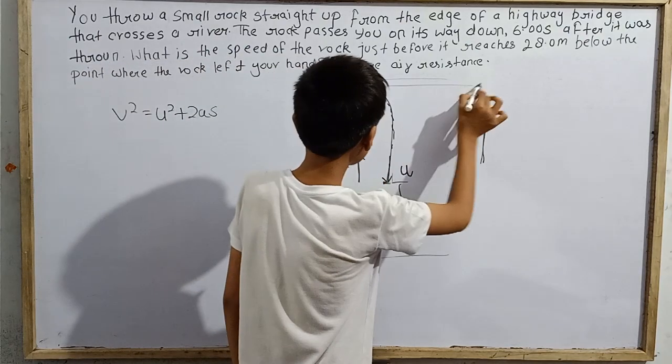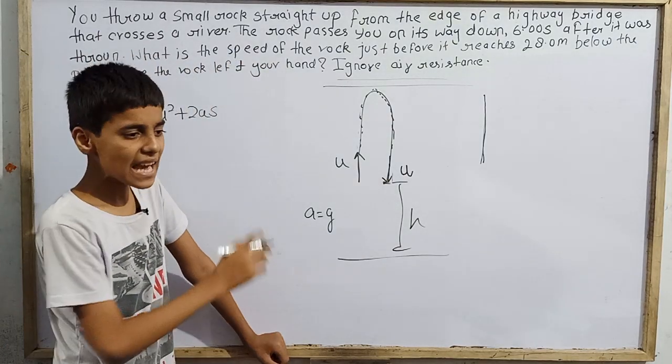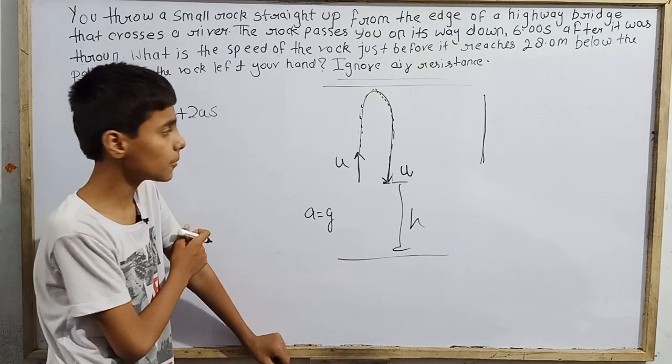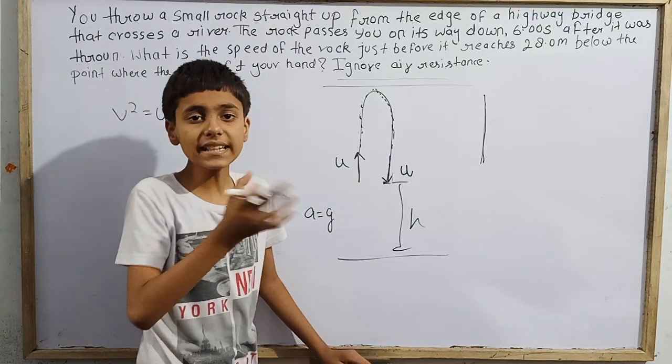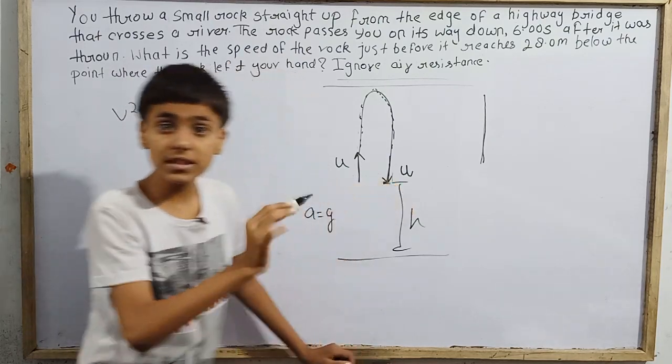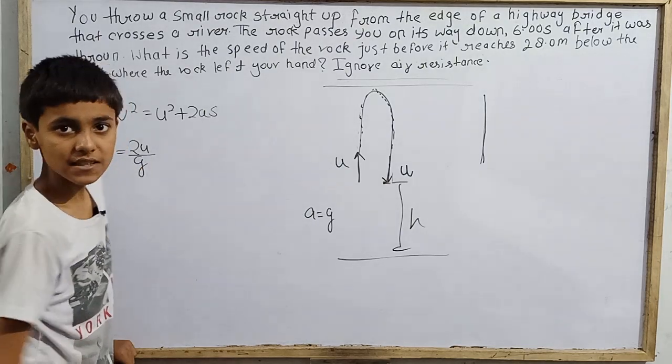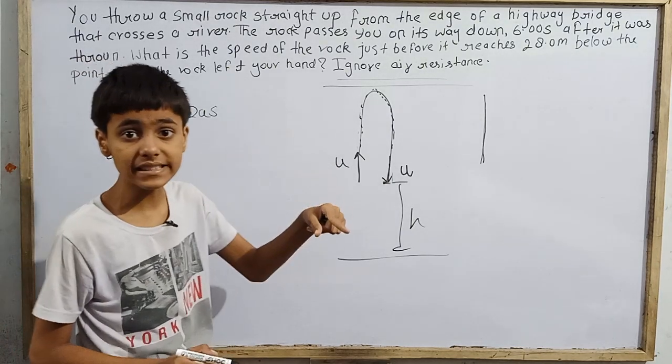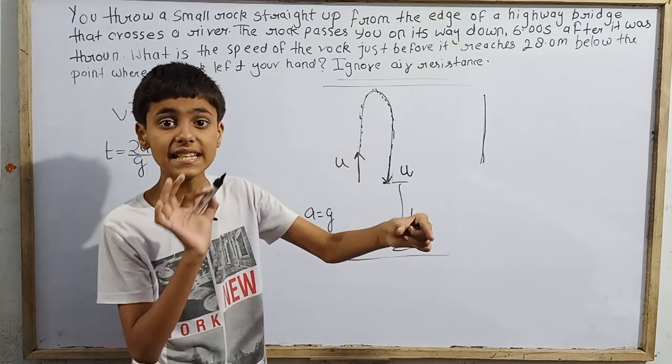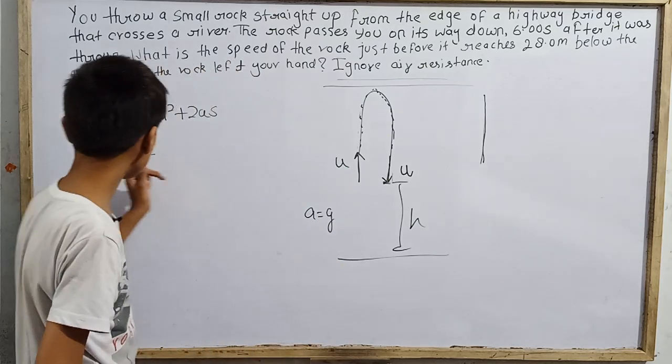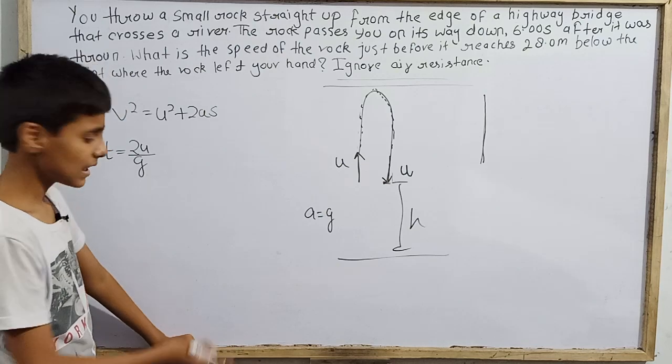From here to cover the time, that is 6 seconds total. Now time of ascent plus time of descent - when we ignore air resistance, I will tell a good question. If it is a straight up particle projected, it comes back to that point when time is 2U by g.